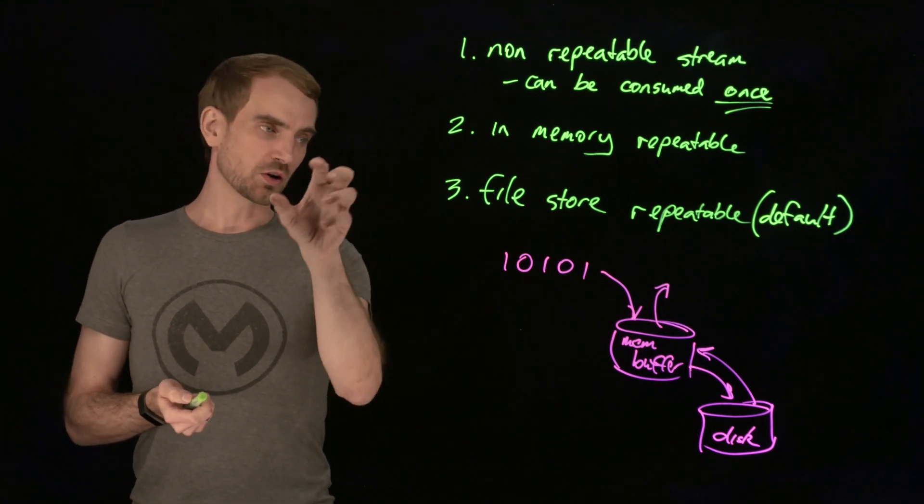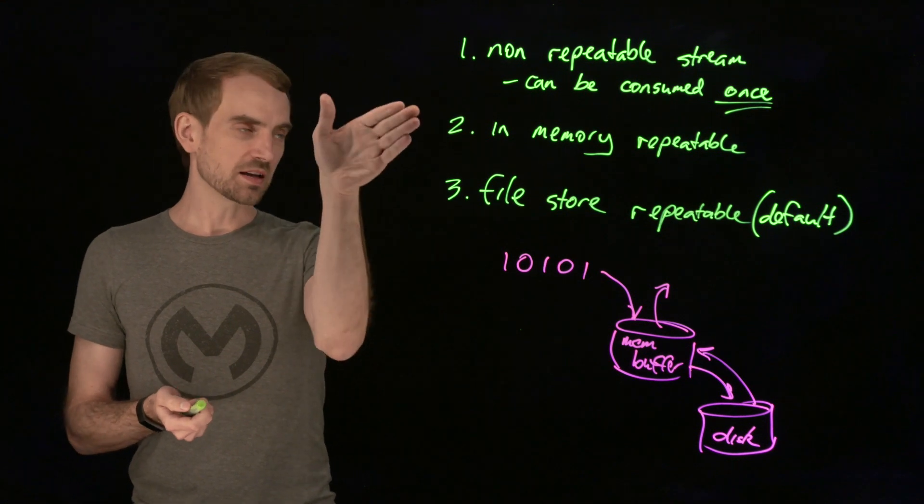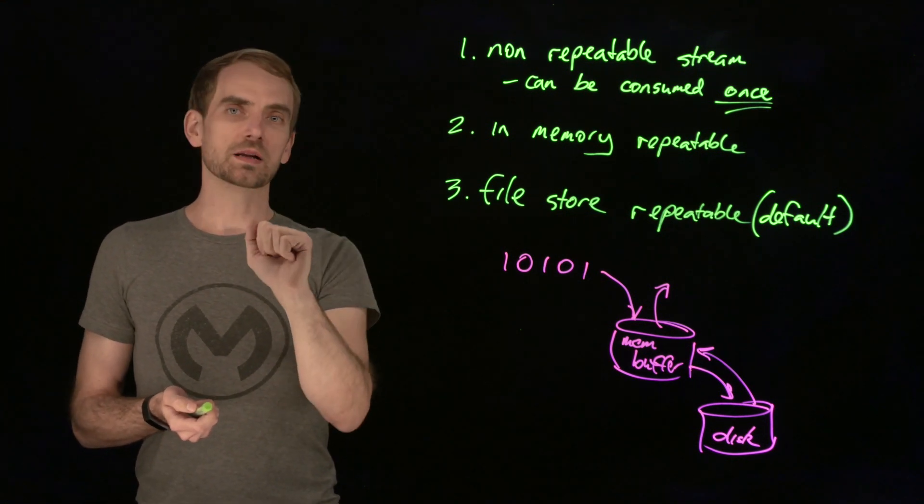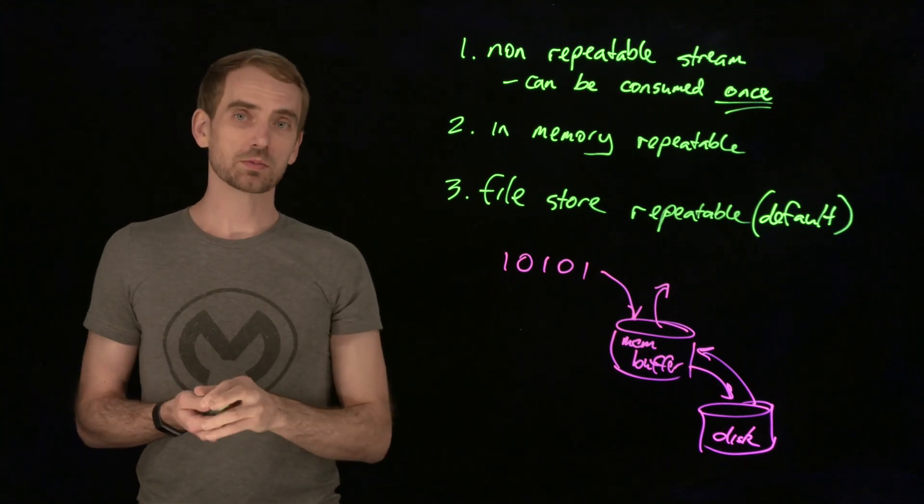Those will return an object stream and you can configure them to be either in-memory, fast or repeatable if you want to consume them more than once, or the non-repeatable stream.